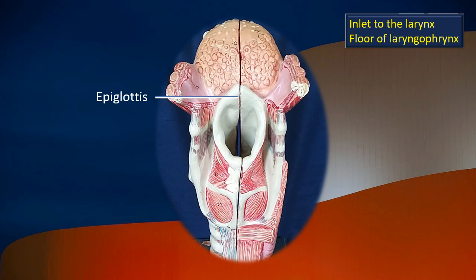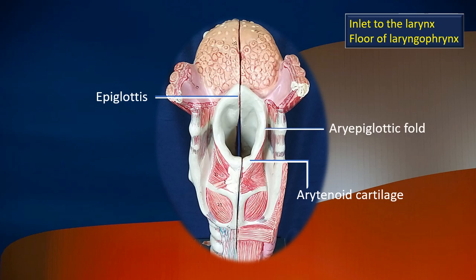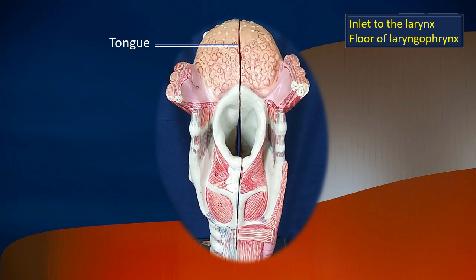Next, the inlet to the larynx, or the floor of the laryngopharynx. You can easily identify the epiglottis; the large tongue is above it. Posteriorly is the arytenoid cartilage. Connecting the epiglottis and the arytenoid cartilage is the mucosal fold — the aryepiglottic fold. Deep to it there is a muscle of the same name, the aryepiglotticus. In the previous view I identified the epiglottis; now we are identifying the tongue in front of it. Between the tongue and the epiglottis is the vallecula on either side of the mucosal fold in the midline, called the median glossoepiglottic fold. That is the pyriform fossa.